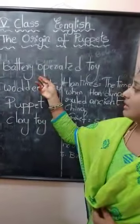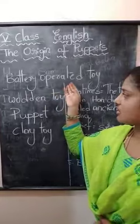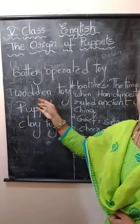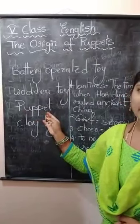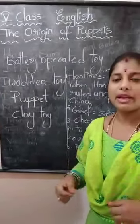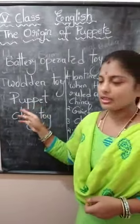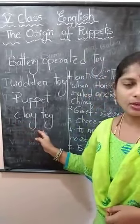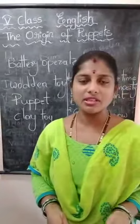What is the first picture? Battery operated toy — each and every child knows how to operate a battery operated toy nowadays. What is the second one? Wooden toy — it is made of wood. What is the third one? Puppet — it is made of cloth and is played by other people behind the curtain. In Telugu we call it 'tol bomolata.' What is the fourth picture? Clay toy — each and every child should know how to make a clay toy.